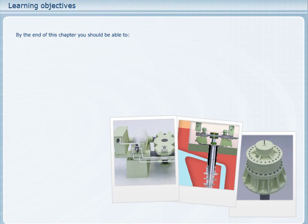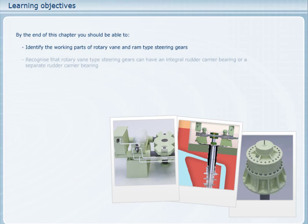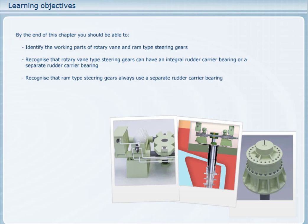By the end of this chapter you should be able to identify the working parts of rotary vane and ram type steering gears, recognise that rotary vane type steering gears can have an integral rudder carrier bearing or a separate rudder carrier bearing, and state what allowance is made for vertical movement and wear of the rudder carrier bearing in ram type steering gears.